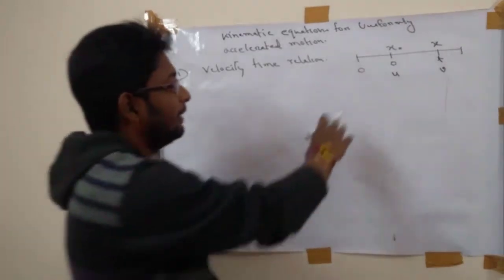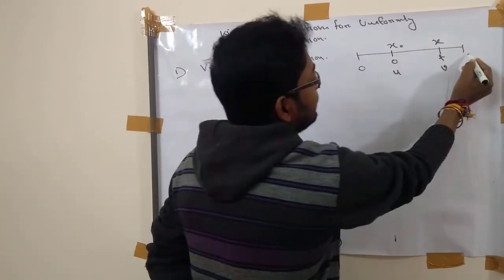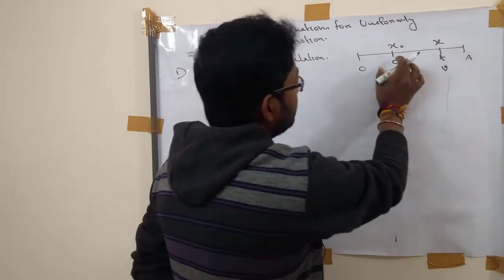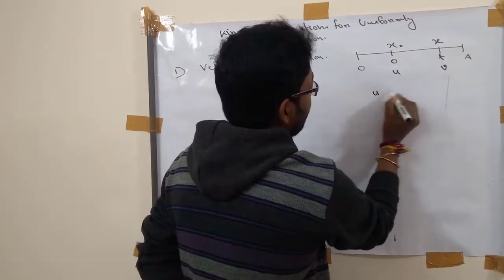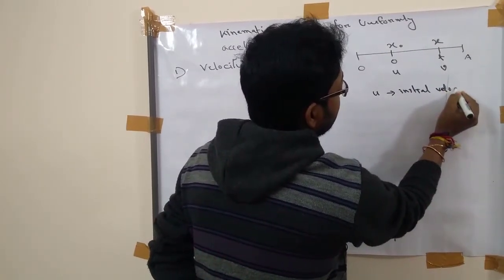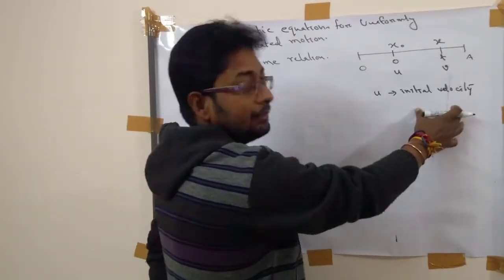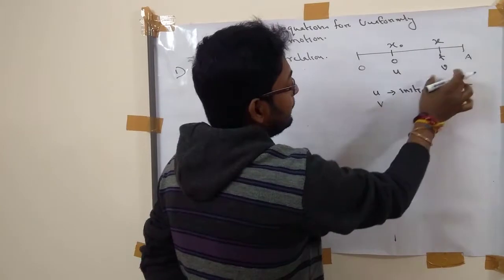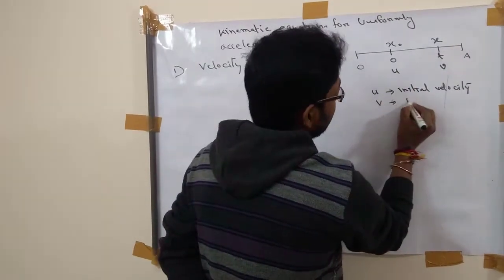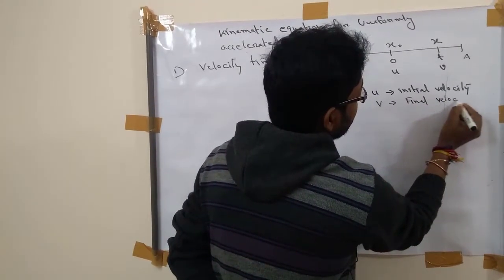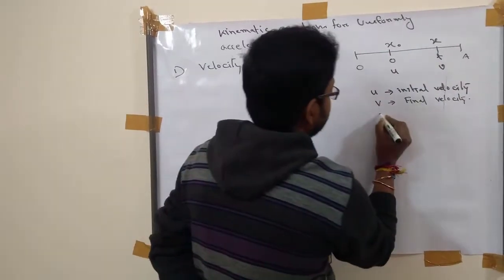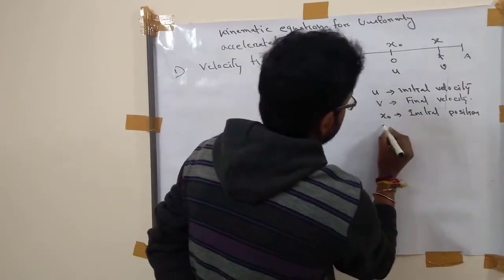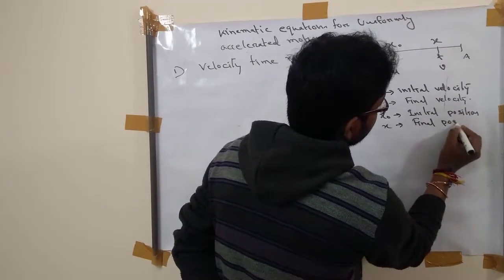First, let us look at the diagram. Suppose a length is O to A. Here, U represents the initial velocity and V represents the final velocity. X0 is the initial position and X is the final position.